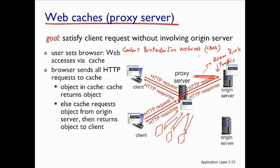Obviously, there is a problem here. The question is: the copy of an object residing in the cache may not be updated. Maybe the proxy server is maintaining a copy of an object, but that object has been updated at the original server. So the question is, am I getting the updated copy of the object I'm trying to access? This is an issue, and in order to handle it, we have the conditional GET mechanism.